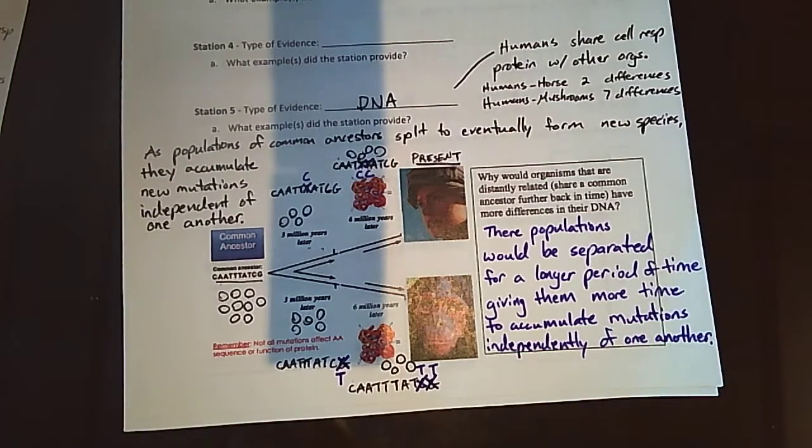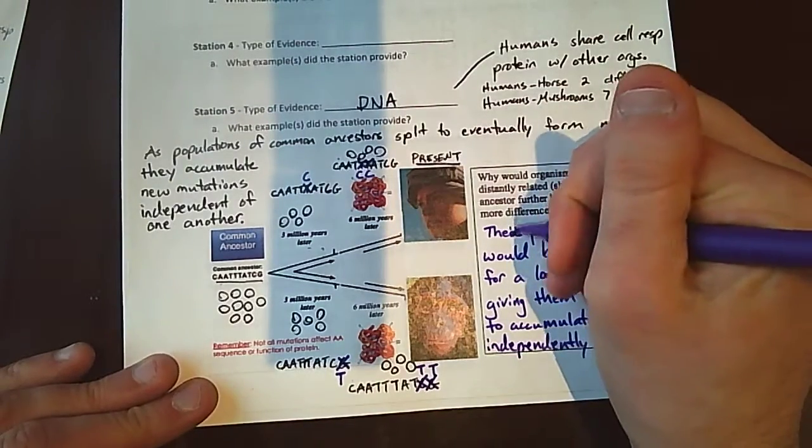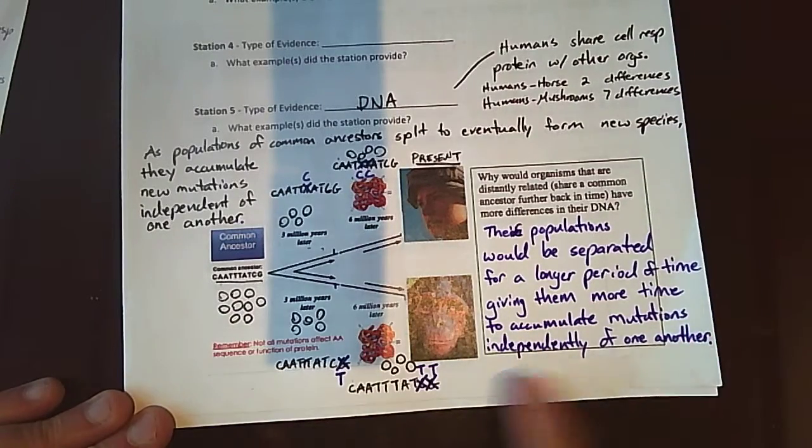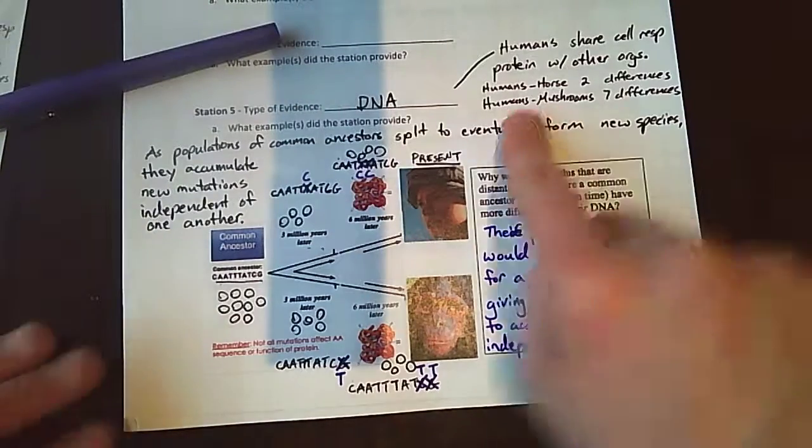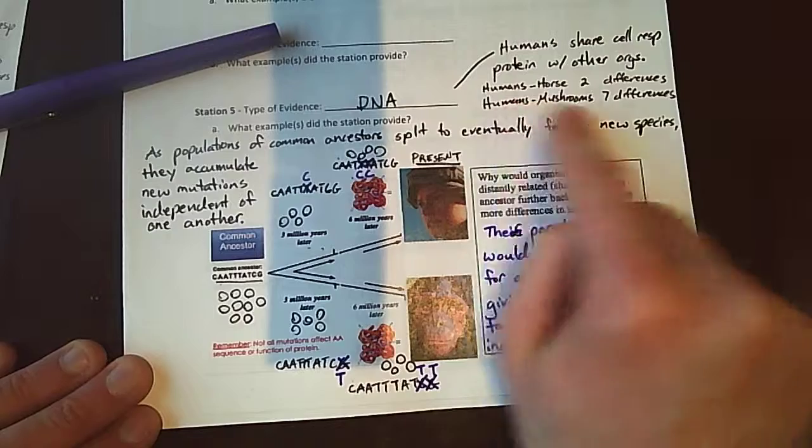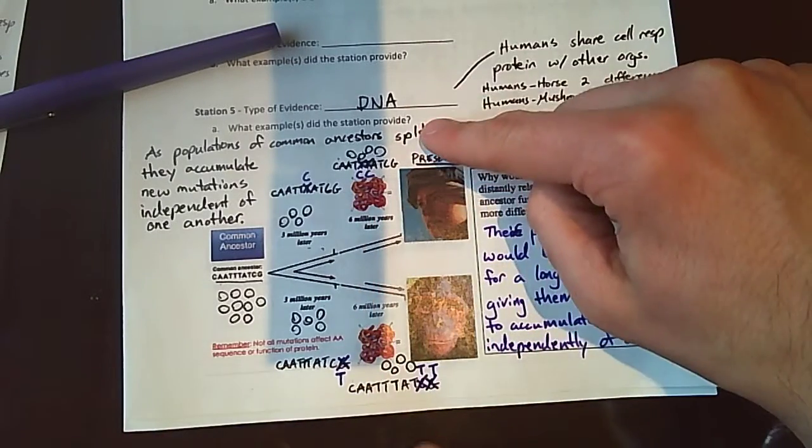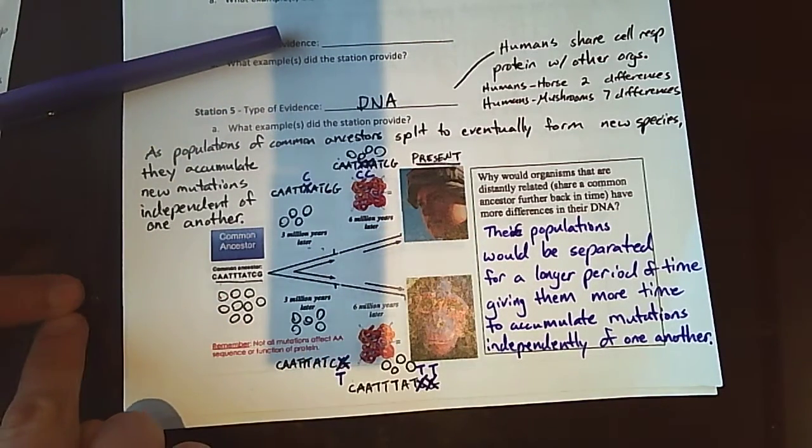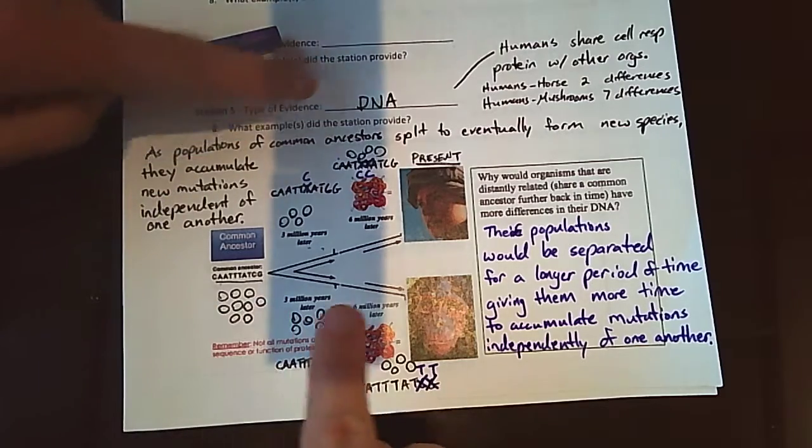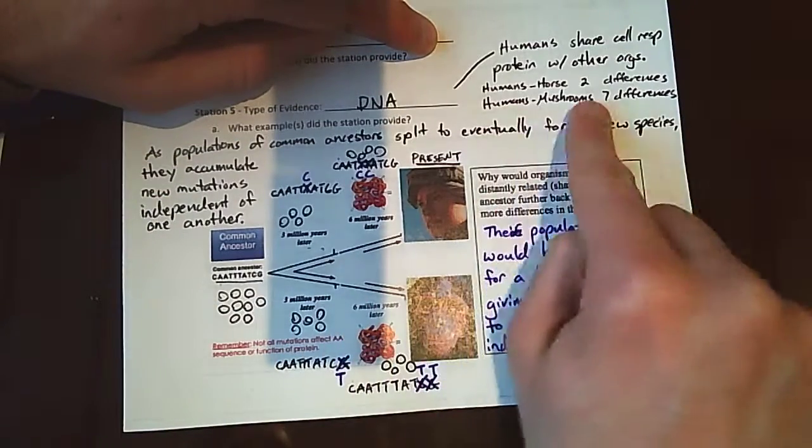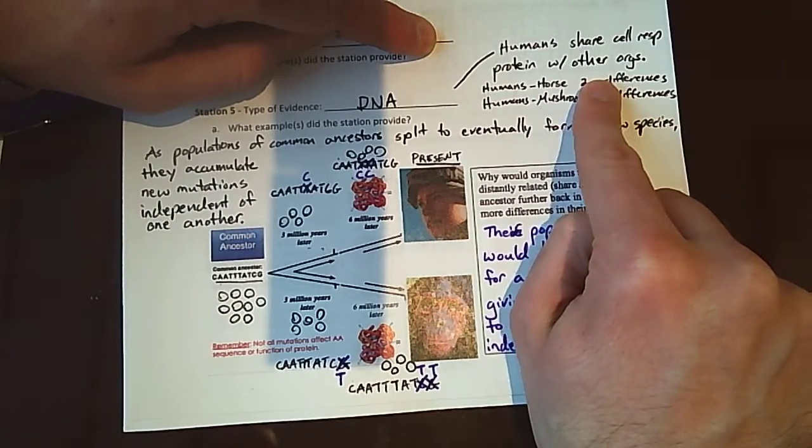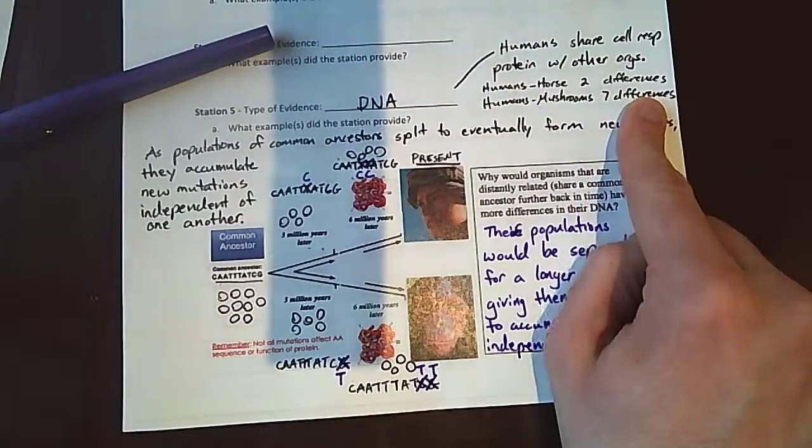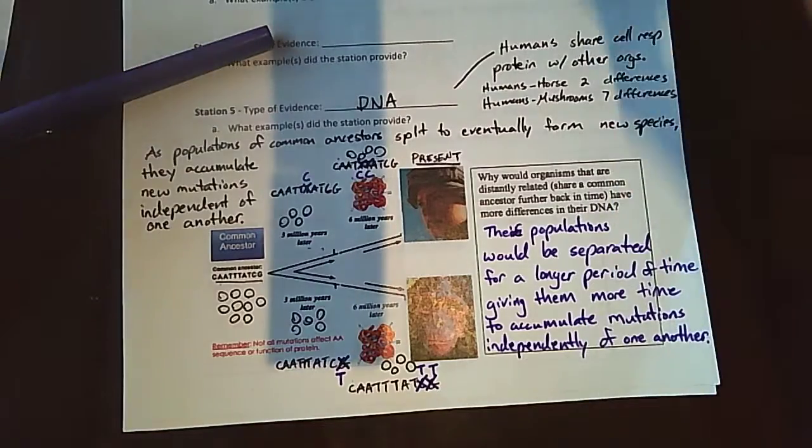So this is what I put. I said their populations would be separated for a longer period of time, giving them more time to accumulate mutations independently of one another. So kind of going back to the humans and horses, humans and mushrooms, right? Mushrooms and humans share a common ancestor much further back in time. And if that's the case, then as their population is separated, they've had more time to accumulate those differences, which explains why humans and mushrooms have more differences than horses. So the less differences you have, the more closely you are related evolutionarily, and the more differences you have, you share a common ancestor further and further back in time.